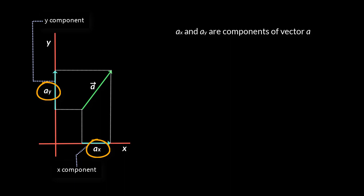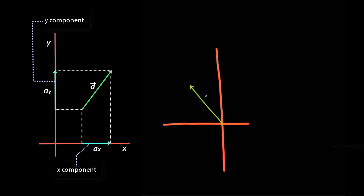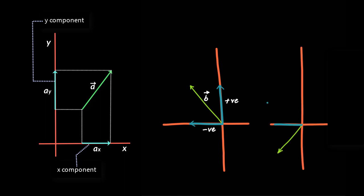Therefore, we do not put an overhead arrow. But soon we will do something that will convert them into vectors. You can also have negative component values. For example, if the vector is oriented like this, you have a positive y-component but a negative x-component. Or in this case, you can see both components are negative.